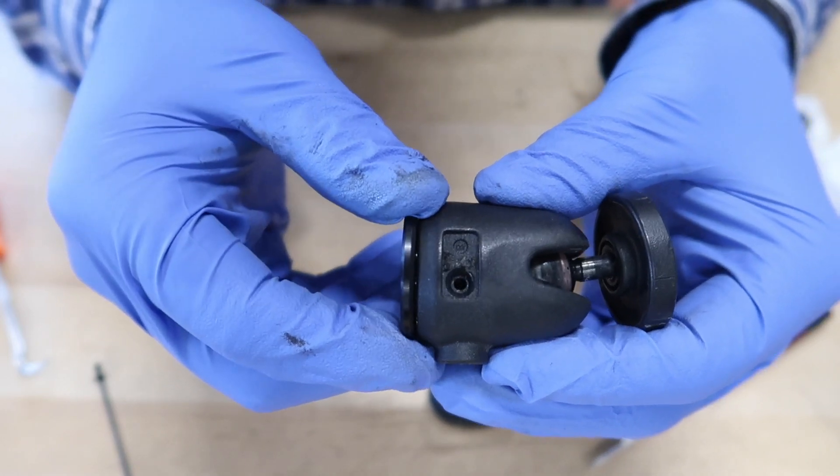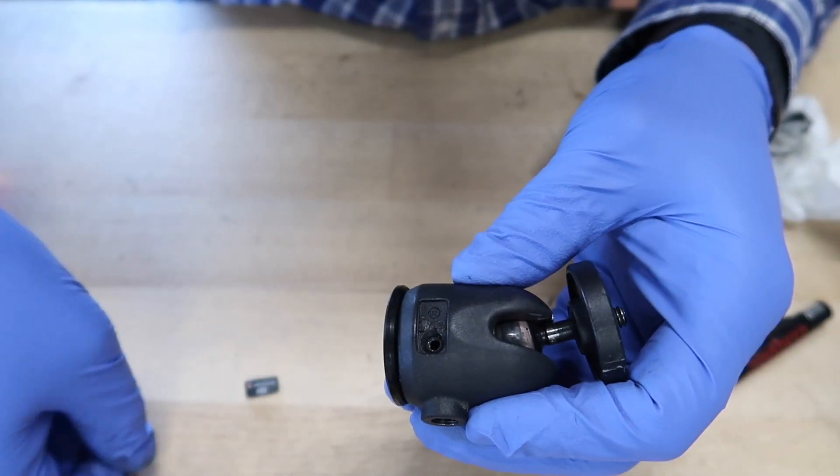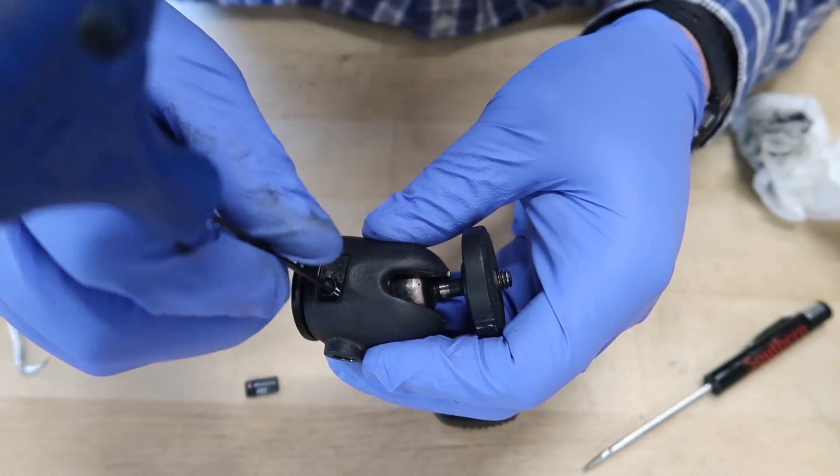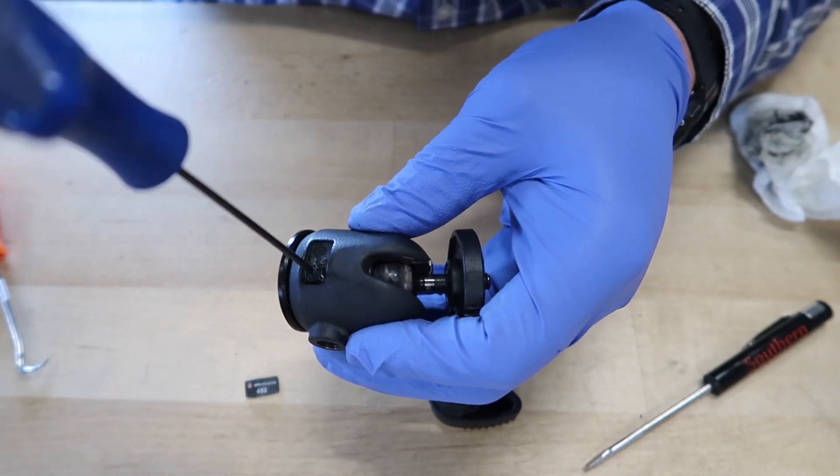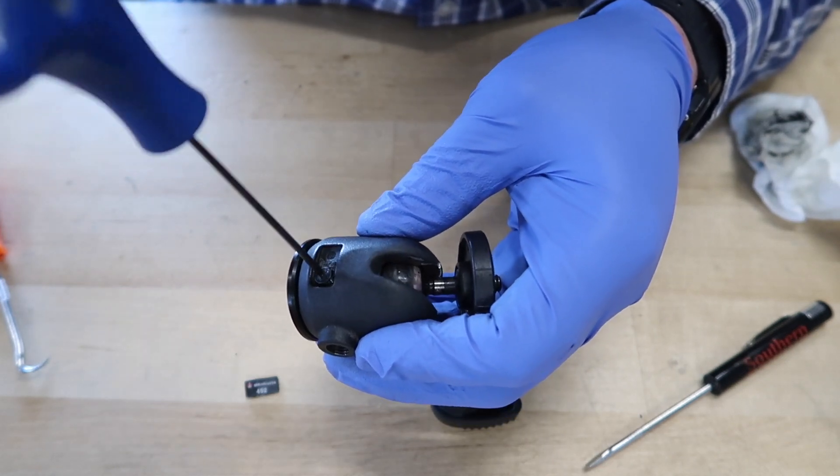So you just line it up there. The part inside is not actually tapped, it's actually this outer housing that has the threads in it. So when you put this in, it just goes in there and all that does, it just stops it from coming loose.